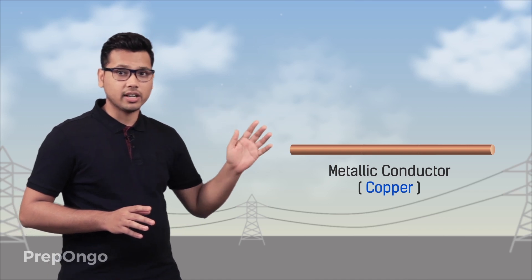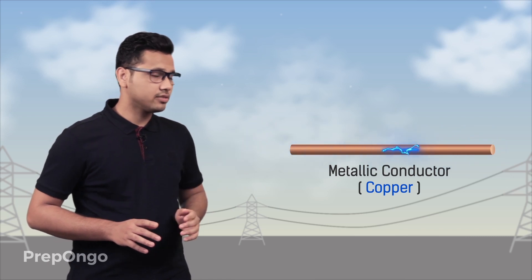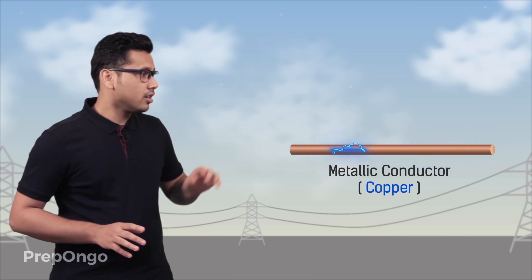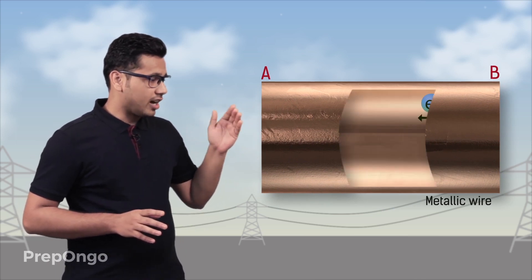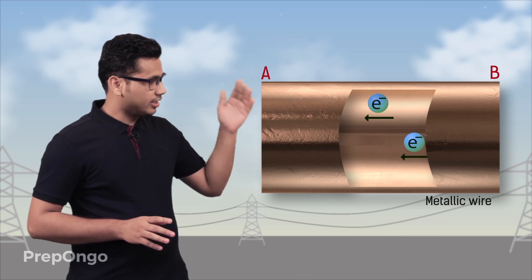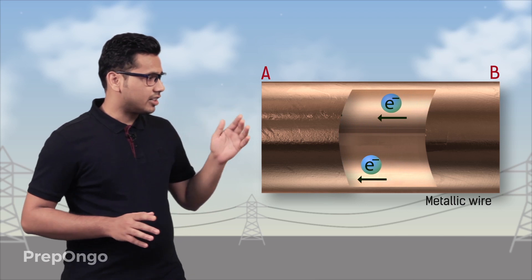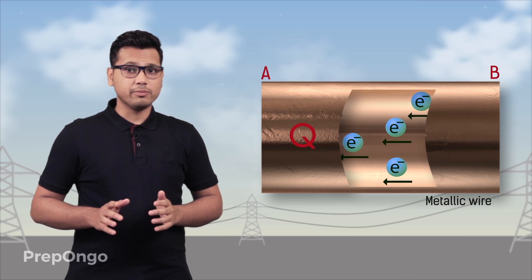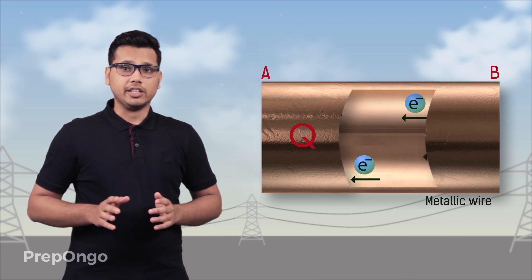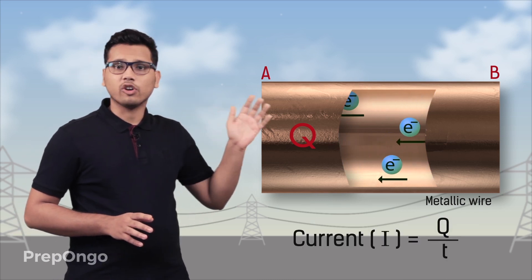To understand this, let us take a metallic conductor and assume that some current is flowing through it. If I zoom in to a particular portion of this conductor, you will find that charge is flowing through this cross section. Let's say that Q charge is flowing through this cross-sectional area and the time it takes to flow is t. So current I will be defined as Q by t for this conductor.